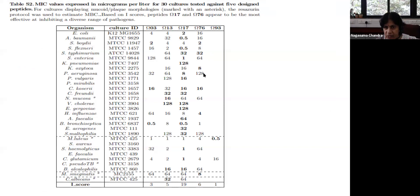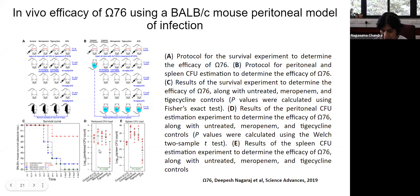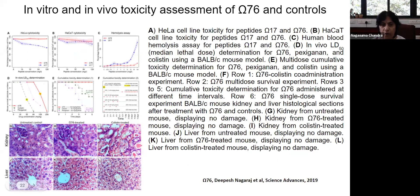Omega 93 was the least successful and Omega 76 was the most successful of the five Omega-series peptides. For the in vivo efficacy, we used a mouse peritoneal model of infection: mice were infected with A. baumannii and both survival and toxicity were measured against colistin and tigacycline — the standard last-resort drugs. Our peptide (the red curve) showed much higher survival compared to tigacycline and colistin.